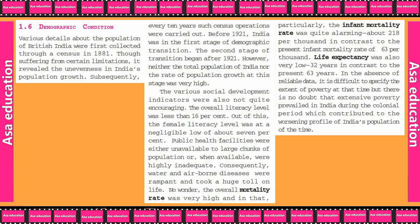Subsequently, every 10 years such census operations were carried out. Before 1921, India was in the first stage of demographic transition. The second stage of transition began after 1921.